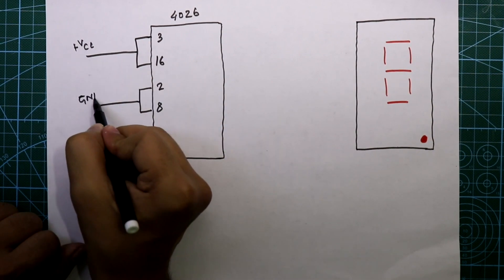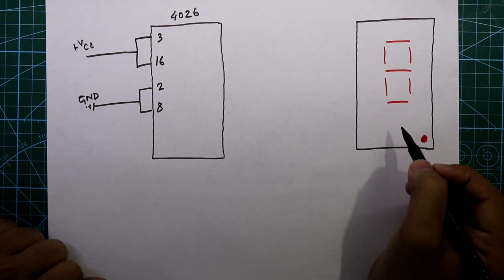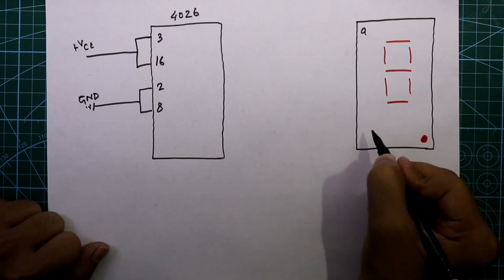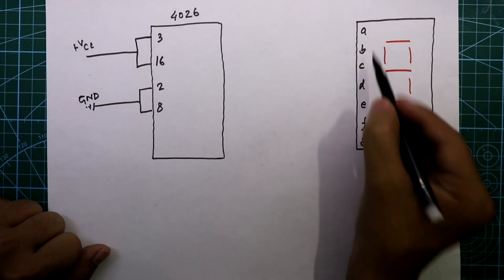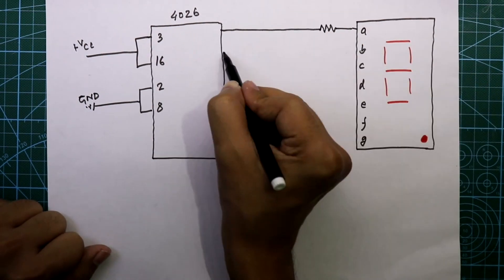This display has 7 inputs: A, B, C, D, E, F, G. With these inputs we have to connect 330 ohm resistors, so we need 7 of them. Its common pin is connected to ground.